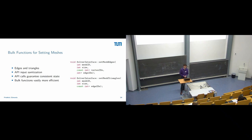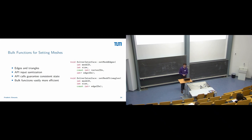Something also missing is block functions for setting connectivity information in meshes — currently edges and triangles, and in the future tetrahedra and others when we add 3D elements. Setting many edges from outside preCICE is very painful and expensive because preCICE has to do a lot of input sanitization and guarantee a consistent state between calls. If you give us many vertex IDs to set edges or many edge IDs to set triangles as a block, this will be vastly more efficient. There is already a prototype; it just needs testing.